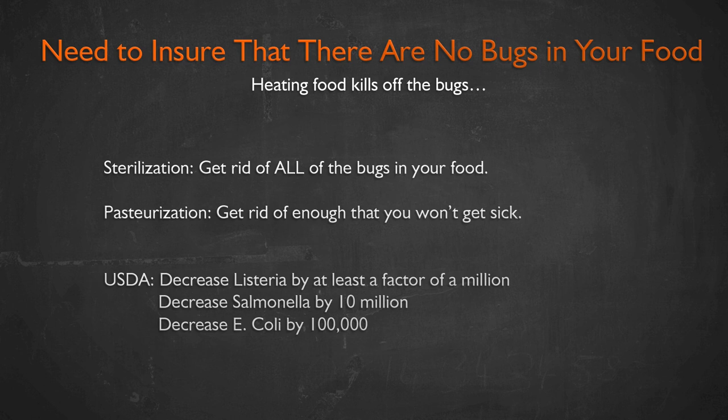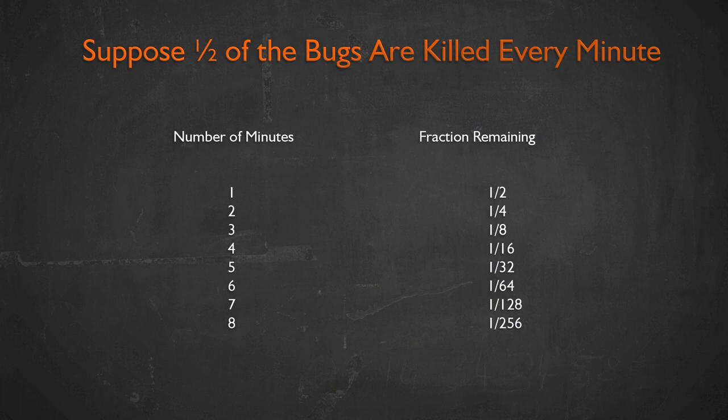The death of bugs works very similarly to their growth. Imagine that every minute, half of the bacteria die. After one minute you have half as many; after another minute, a quarter; then an eighth, a sixteenth, and so on. So if the death time were one minute, you divide the number of bacteria by 2^n, where n is the number of one-minute intervals elapsed. This tells you how quickly bacteria die off and whether you've met the USDA threshold.